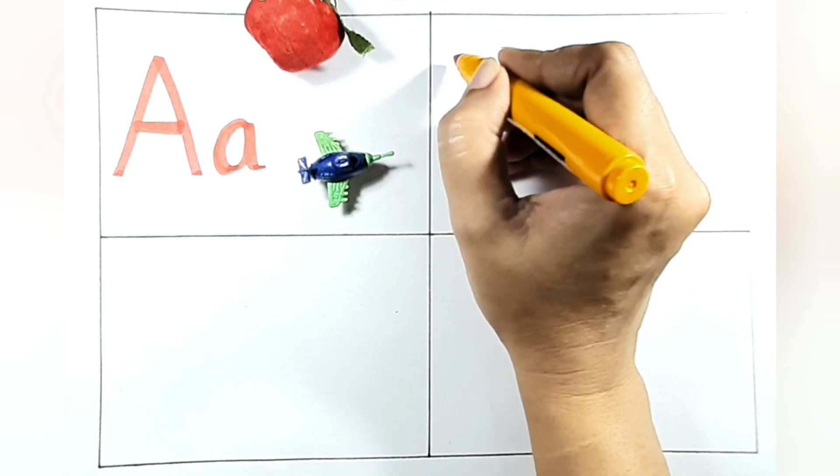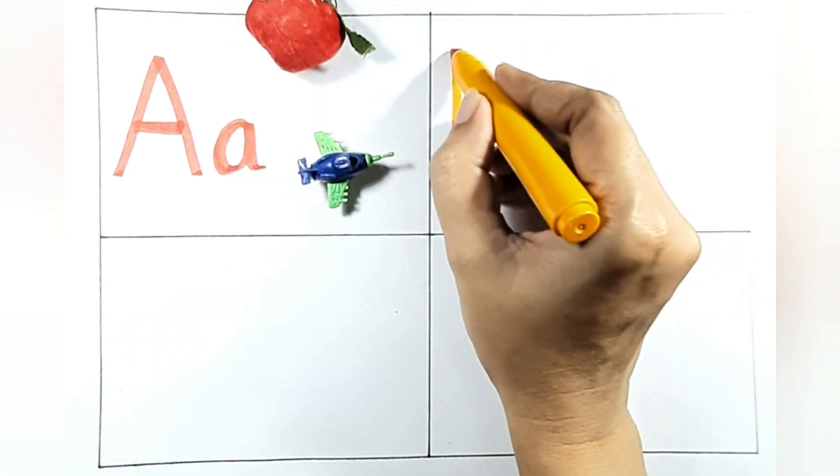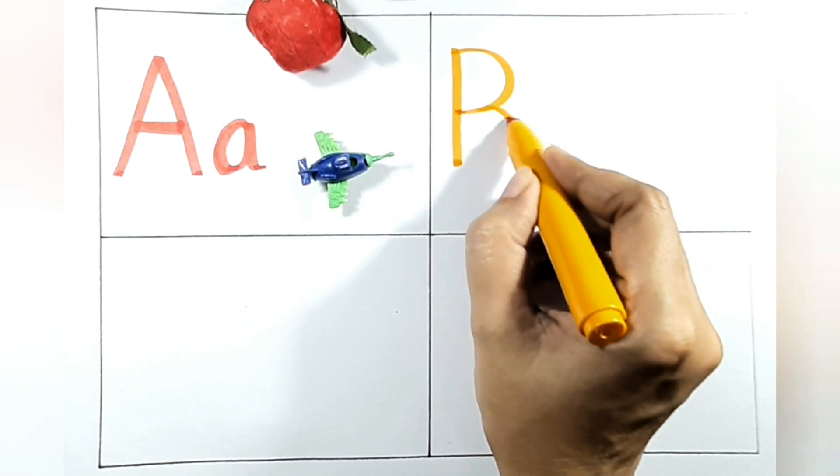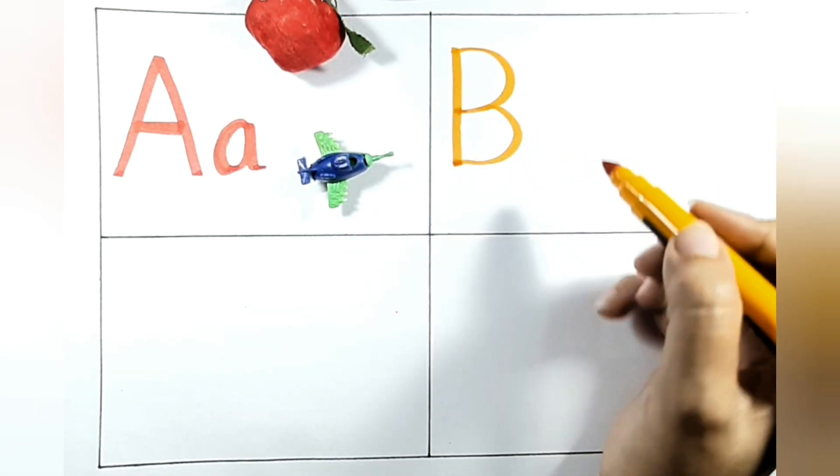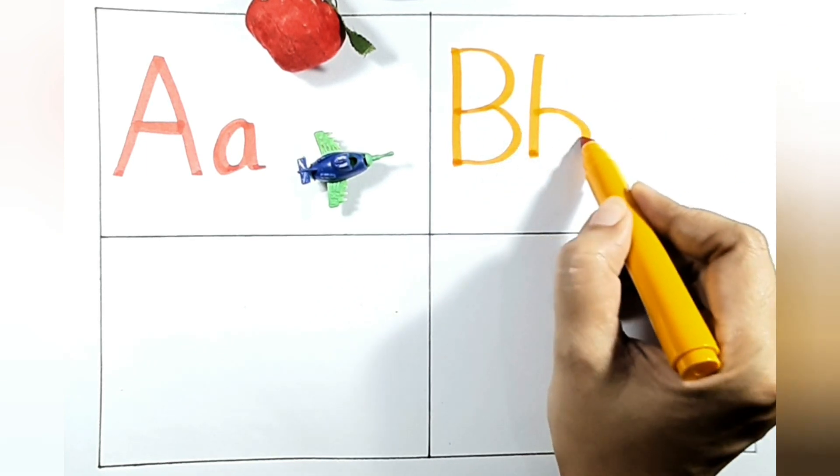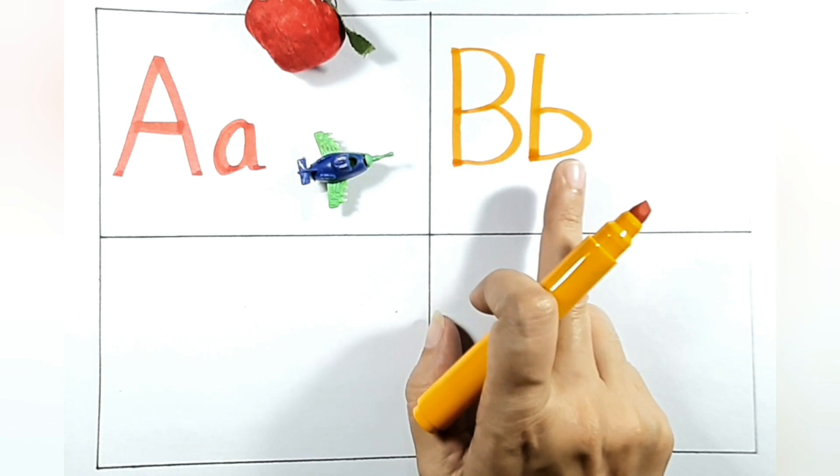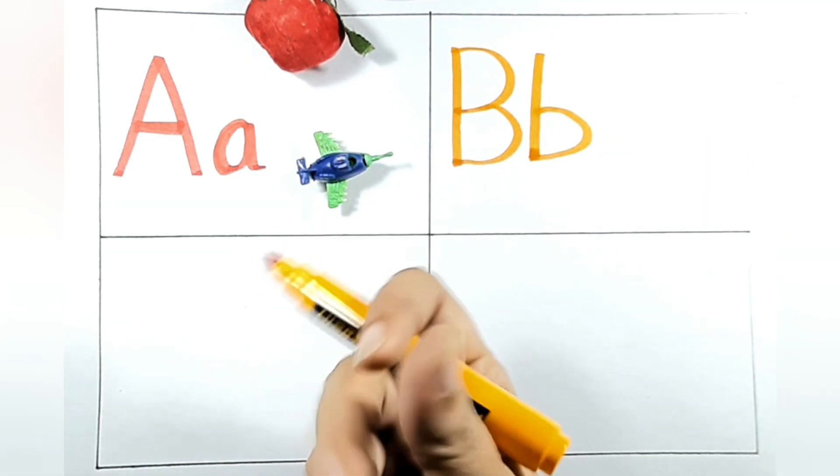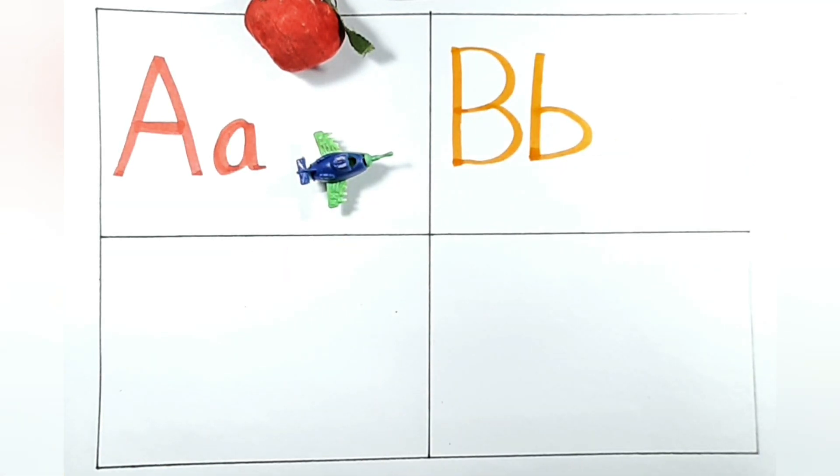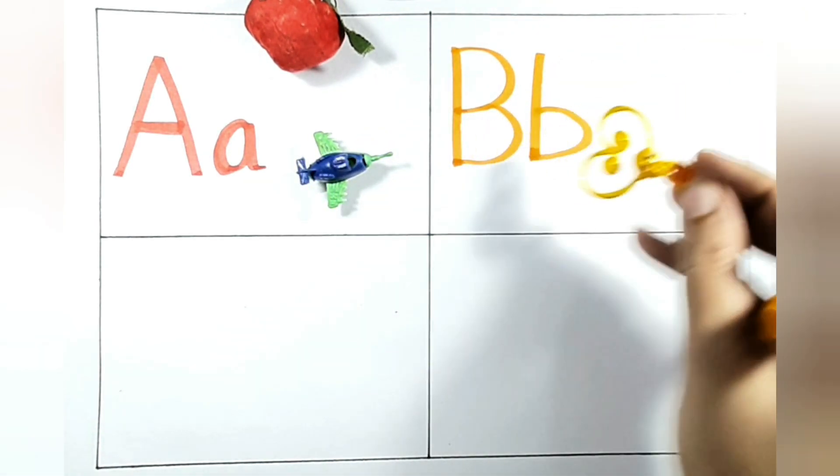I will write B. Now write B, capital B. Now small b like this. What is B for? Guess what I will bring to you. Yes, yes, yes, here it's come. Yes, B for bee. It's a bee, beautiful little bee. B for bee.